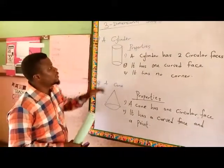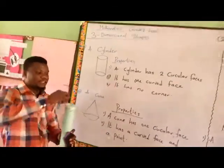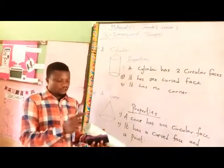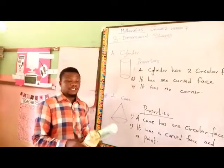A cylinder has two circular faces, just like this. This is one, this is two. Look at this one. This is one and this is two. This is a cylinder for you.